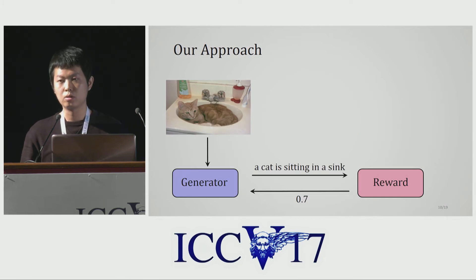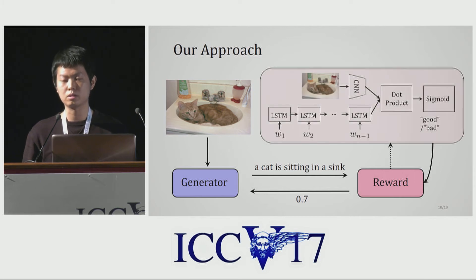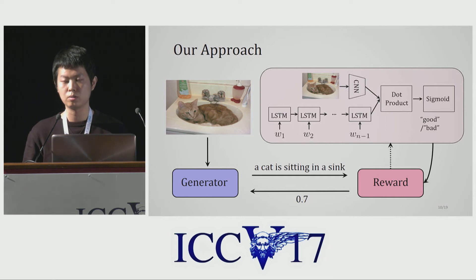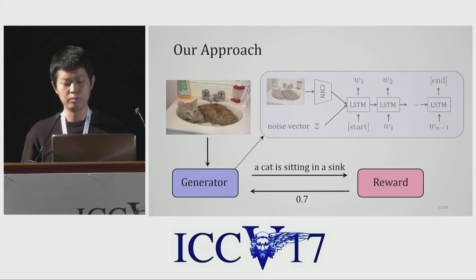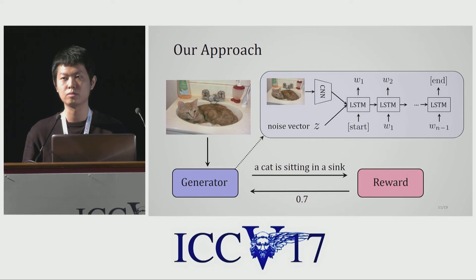So we propose to use a conditional GAN to jointly deal with caption generation and evaluation. Our approach uses reinforcement learning to avoid technical issues such as non-differentiable sampling operations. Instead of using evaluation metrics as rewards, we use a parametric evaluator that takes an image and a caption as inputs and outputs a score ranging from 0 to 1 as an estimation of caption quality. Our caption generator has an additional input — a noise vector Z — which allows sampling different Z values to generate more diverse captions. By jointly training the generator and evaluator, we can generate diverse captions and estimate their qualities.